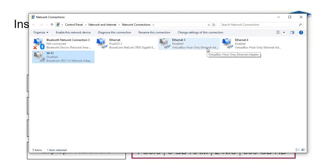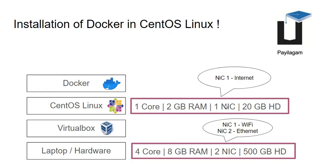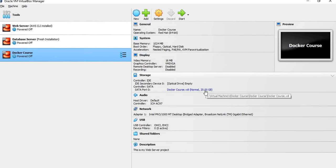If you have already seen part 1 video, this network card will be shared with the VM. This is the network interface card and the internet. If you have already checked, this network will be shared with you. This is the settings, and we will modify the RAM.